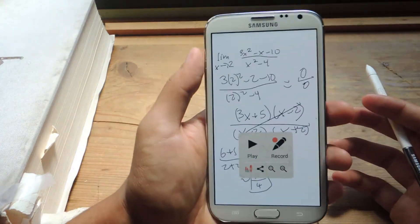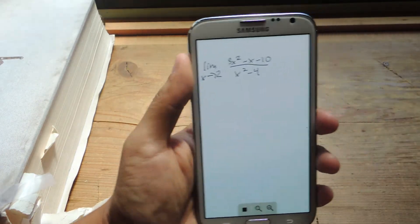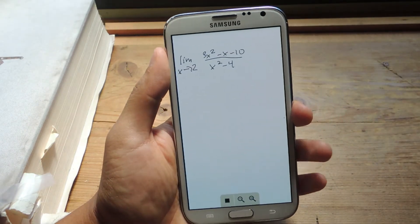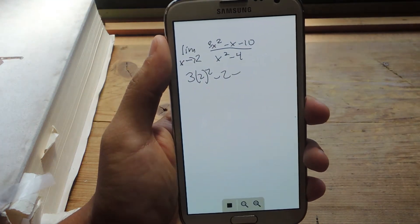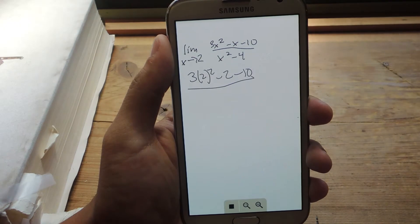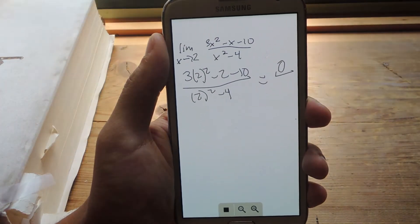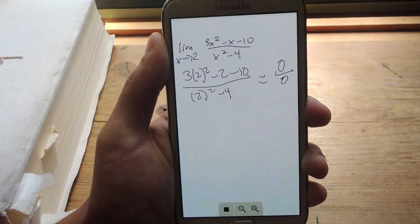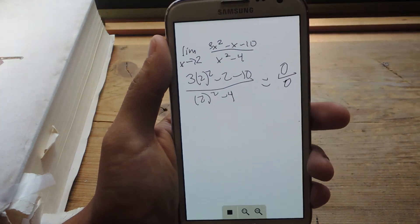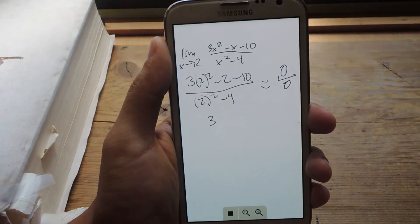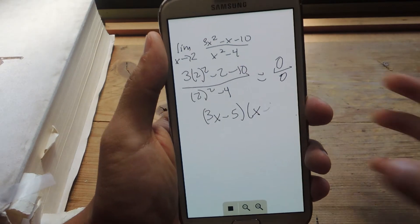And here I'm going to press play, and I'll show you guys an example of what it looks like. Okay, so the first thing you need to do is plug in the 2 into the x's. So I'm going to plug in 2 minus 2 minus 10 over 2 squared minus 4. That equals 0 over 0, so we can't have that. So the next step is you'll need to factor out from this. So the top one will become 3x minus 5 and x minus 2.